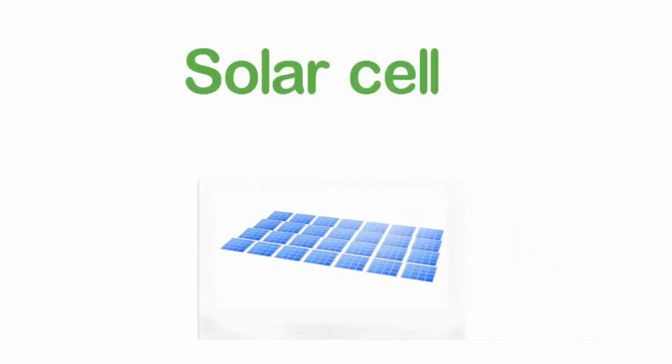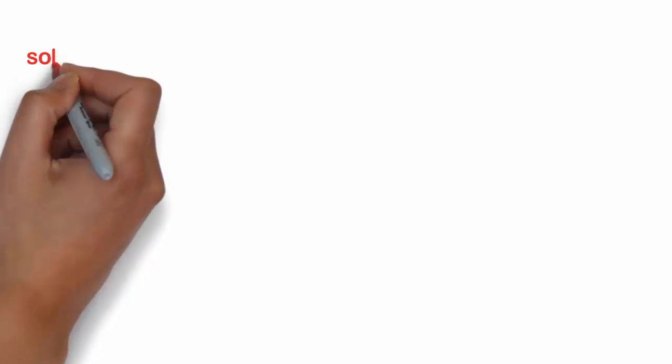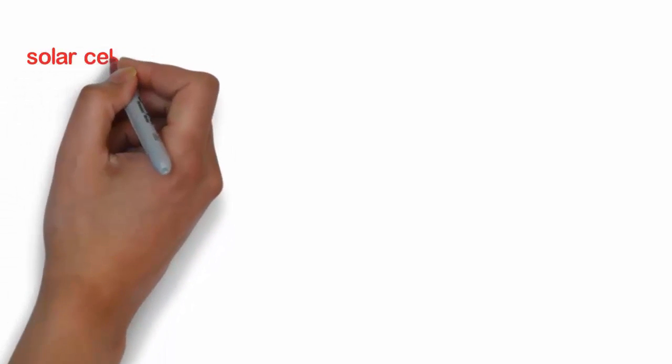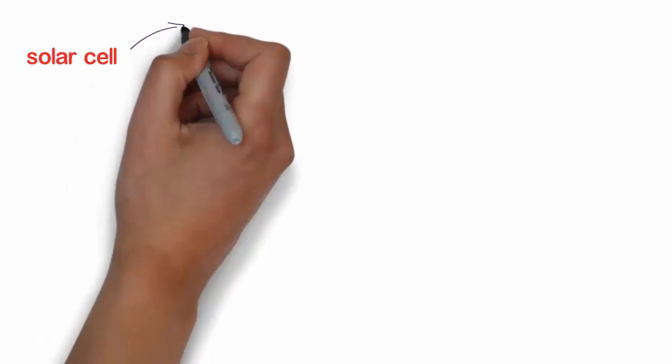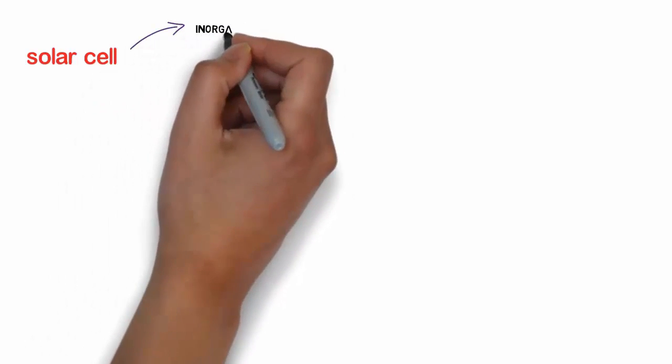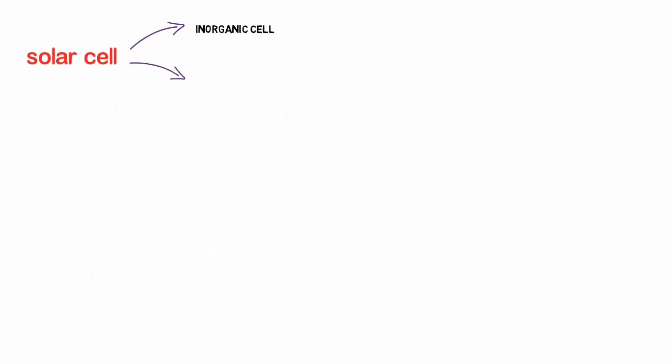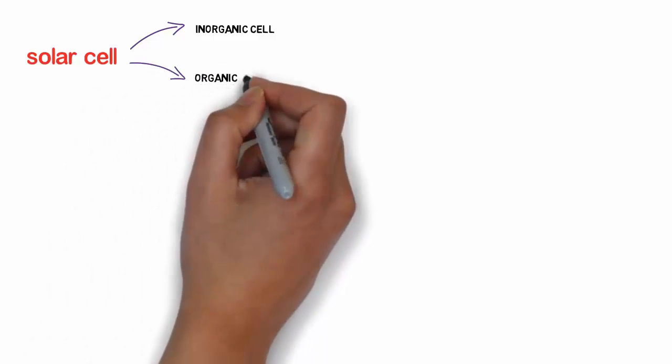Hello guys, today I'm going to talk about basics of solar cell. Based on the material used, solar cell is of two types: one is inorganic solar cell and the other is organic solar cell.